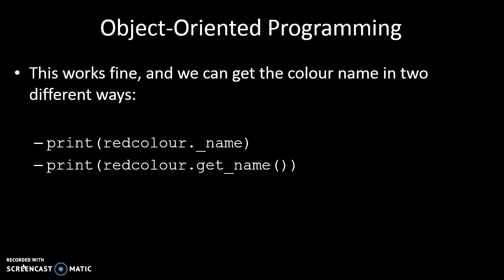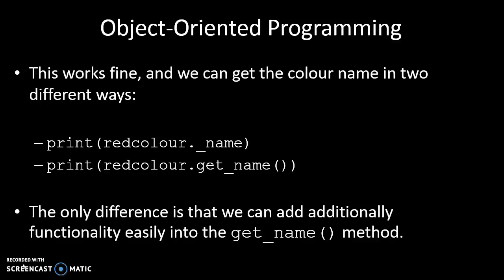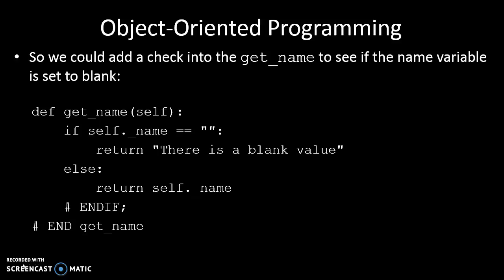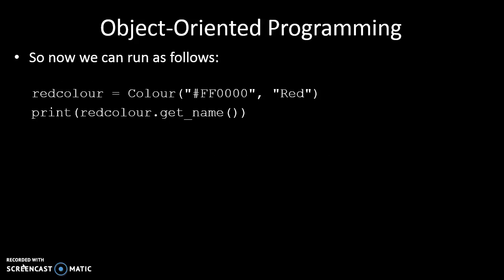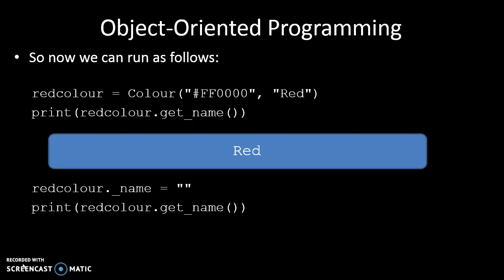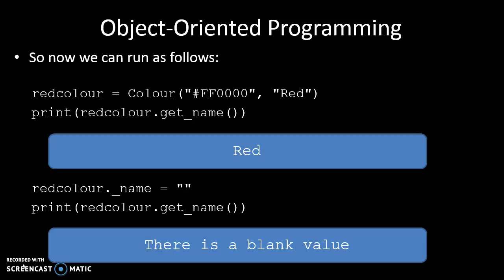This works well, and we can get the color name in two ways — either print redColor.underscore_name, or print redColor.get_name. There's currently no difference between them, but we could later add additional functionality to the get_name method. For example, we could check if somebody set the name to blank — then instead of returning just blank, we'd return a message saying 'there is a blank value'. Otherwise we'd return the actual name. So if redColor is red and we ask for get_name, it prints 'red'. But if we change the name to blank, it prints 'there is a blank value'.